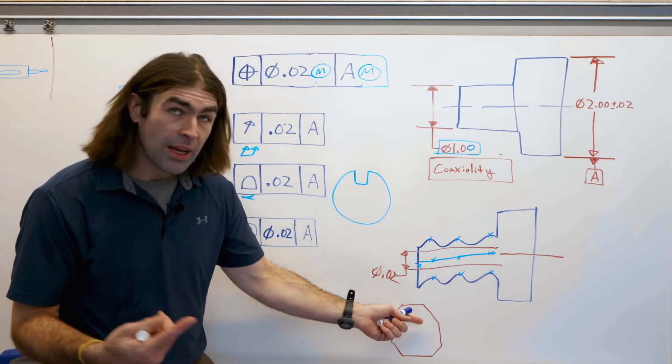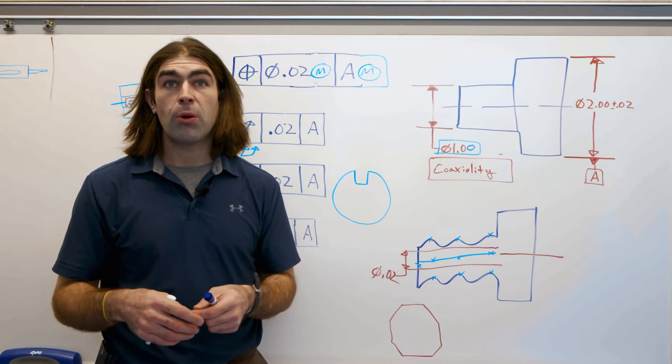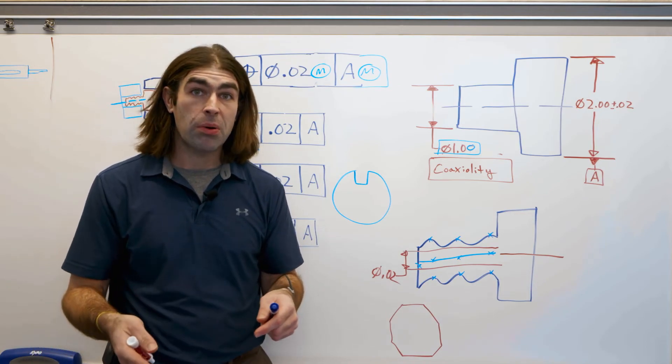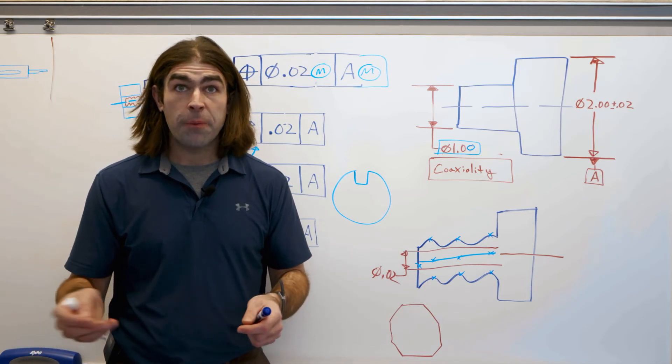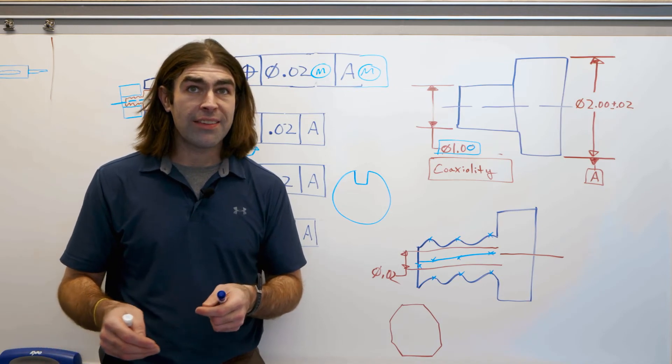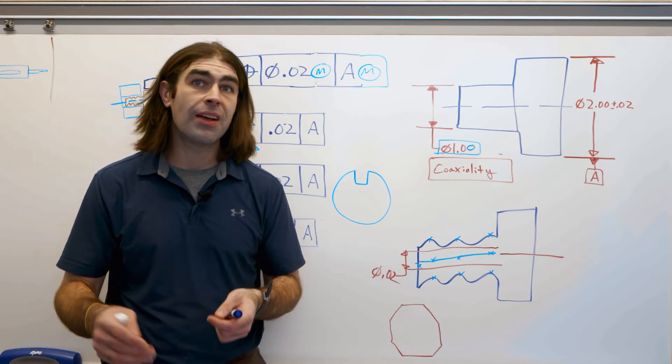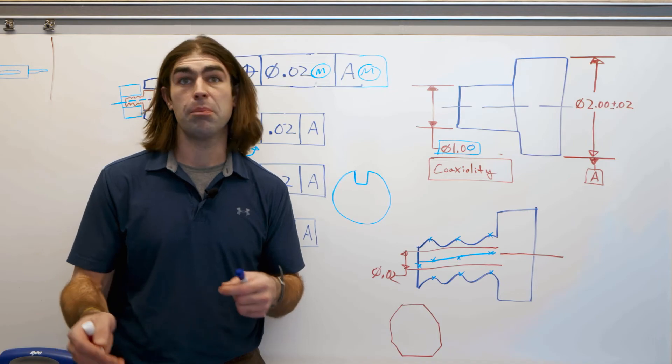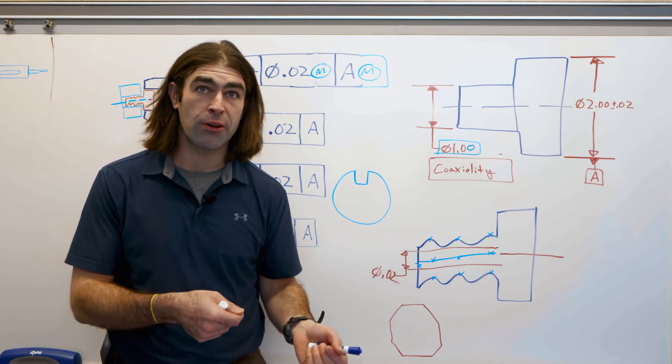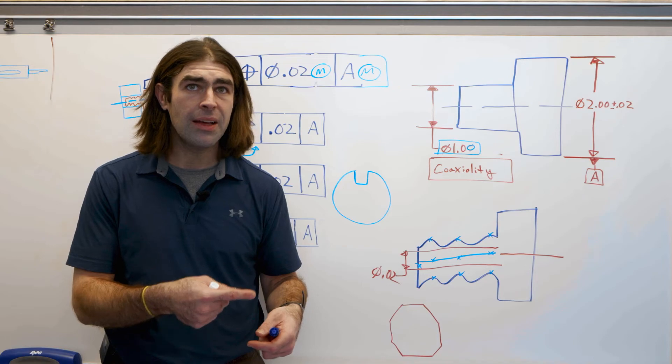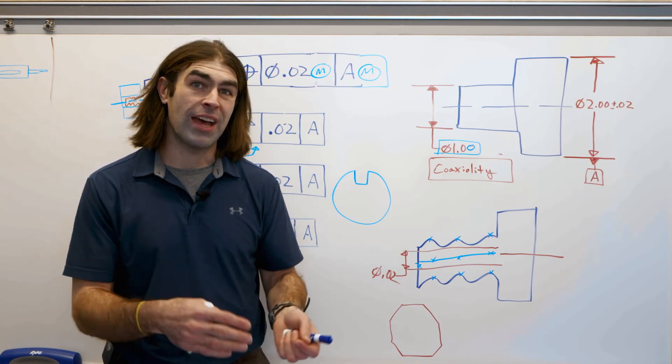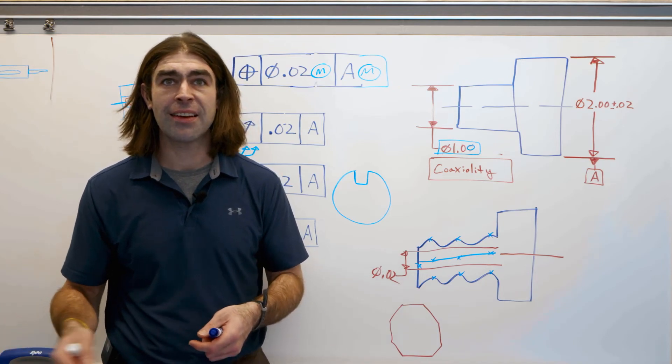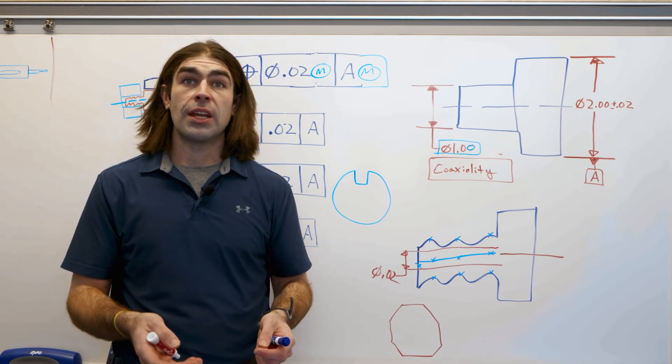So what concentricity was used for is when you need to control the balance of a spinning part. Now, I would argue that most parts that spin really fast, industrial turbines and stuff, they get produced and then they get balanced. They put it on a machine and they'll grind out a little chunk to balance it. So trying to achieve that through manufacturing is kind of a big ask, but that's what concentricity is for.